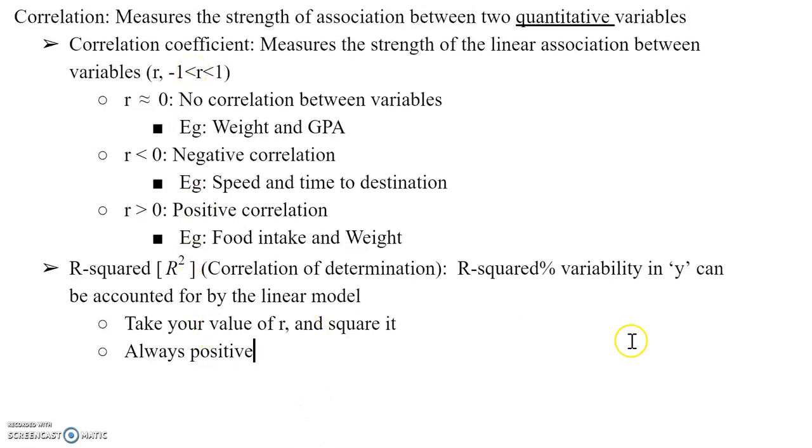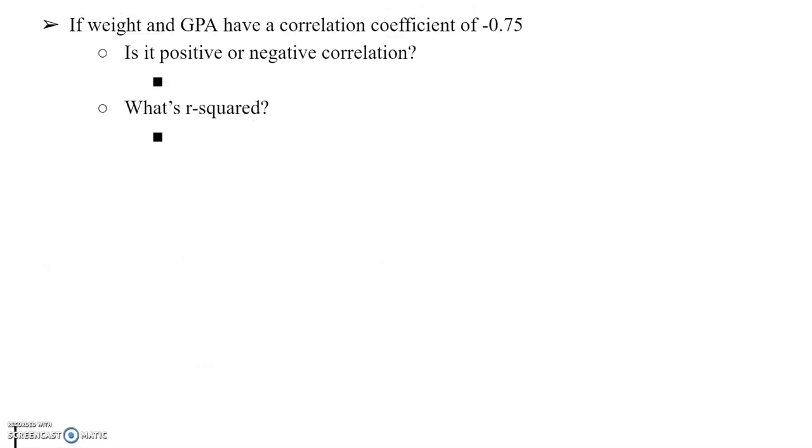I need you to try these two questions. If weight and GPA have a correlation coefficient of negative 0.75, is it positive or negative correlation? And what is r squared? Pause the video and try it out for yourself. Did you get these values? Is it positive or negative correlation is very simple. Since our correlation coefficient is less than 0, it is negative. r squared is also very simple because it is just the correlation coefficient squared. Negative 0.75 times negative 0.75 gives you 0.5625 or 56.25%. Writing it in either a decimal form or percentage form is perfectly acceptable, but do ask your teacher how they prefer to write it.